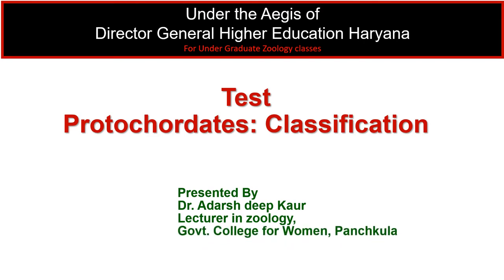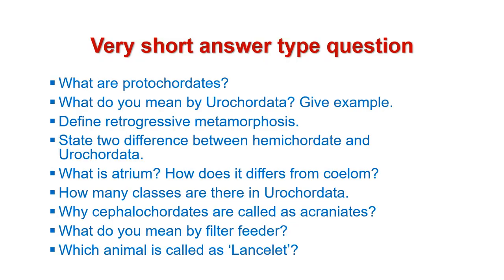The first category of questions are very short answer type questions, which you have to answer in two to three lines. The first question from this category is: what are Protocordates? Next is: what do you mean by Urocordata? Give an example. Next is: define retrogressive metamorphosis.